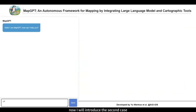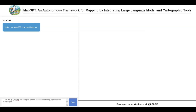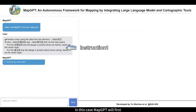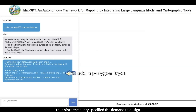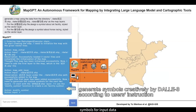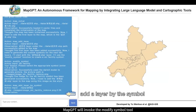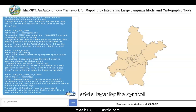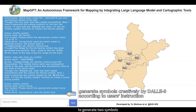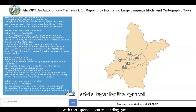Now I will introduce the second case. In this case, MapGPT will first initialize the map like the process in the previous case. Then, since the query specified the demand to design symbols for the input data, MapGPT will invoke the symbol design tool — DALL-E 3 as the core — to generate two symbols, and subsequently add the two layers with corresponding symbols respectively.